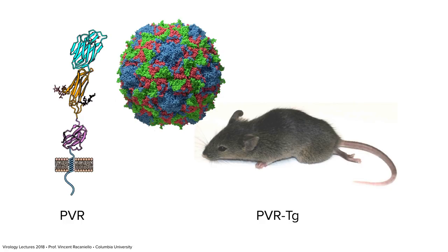I came to Columbia in 1982 and wanted to make a mouse model to study poliovirus. One of my first students, Kathy Mendelson, identified the cellular receptor for poliovirus. She cloned the gene and showed that the encoded protein, if produced in a mouse cell, allows polio to infect those cells. Mouse cells are not susceptible to polio infection, but they are permissive — susceptible means they don't have a receptor, while permissive means the internal environment is suitable for the virus.